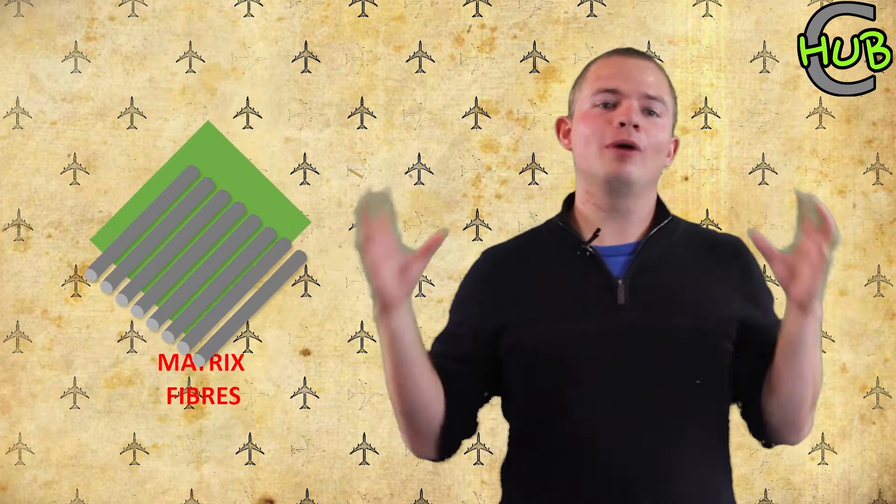Now this is where the matrix comes in. The matrix acts as a kind of glue, binding the fibers together and allowing the loads to be shared equally between them. The matrix also acts as a protective shield, guarding the important fibers within from damage.